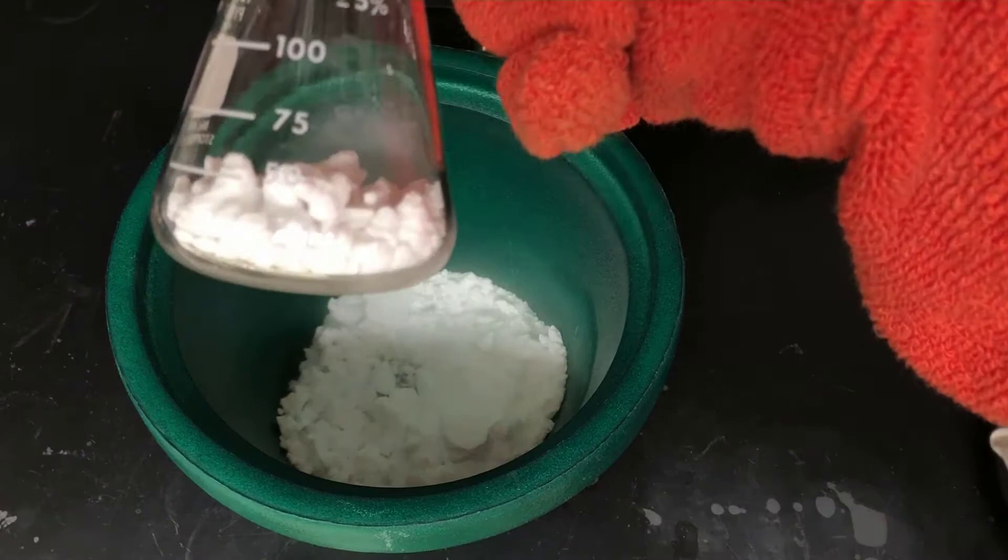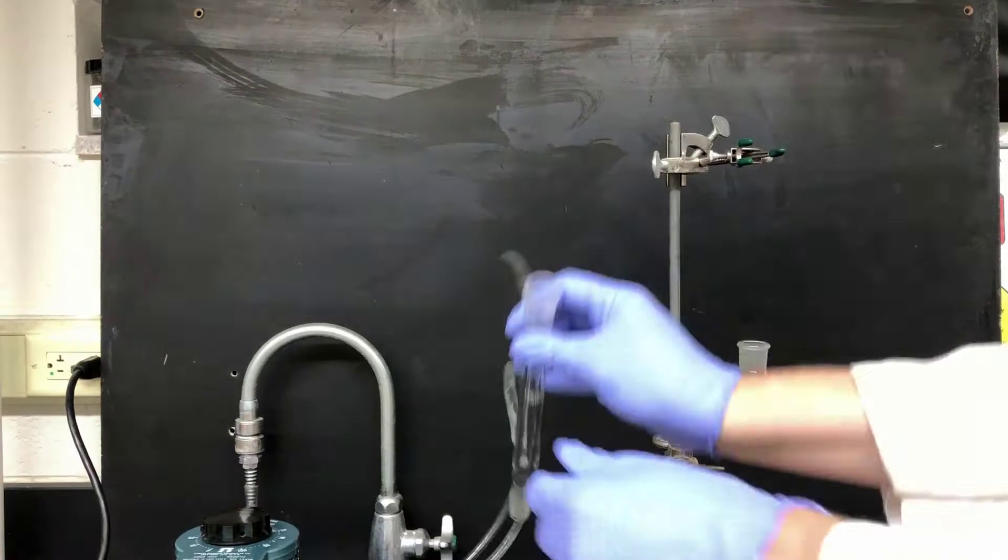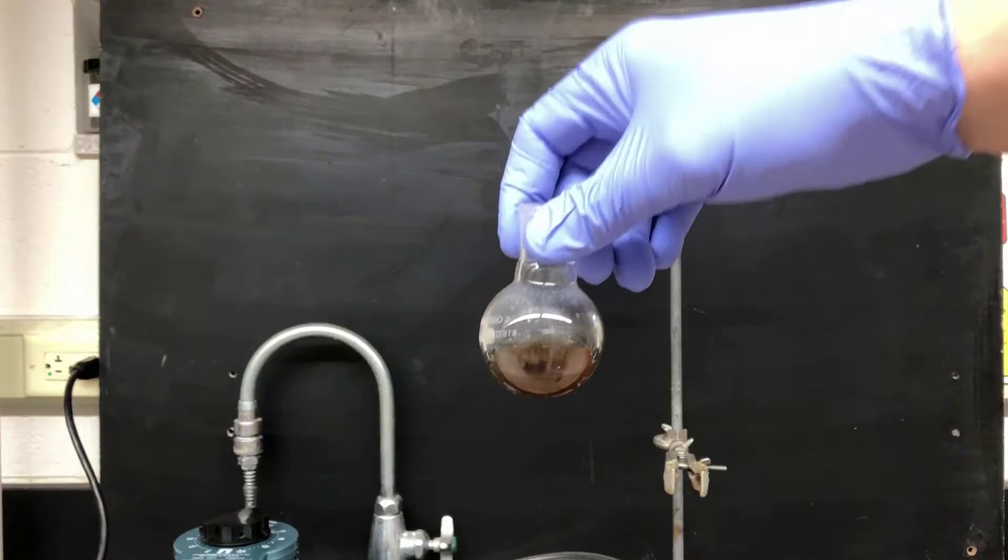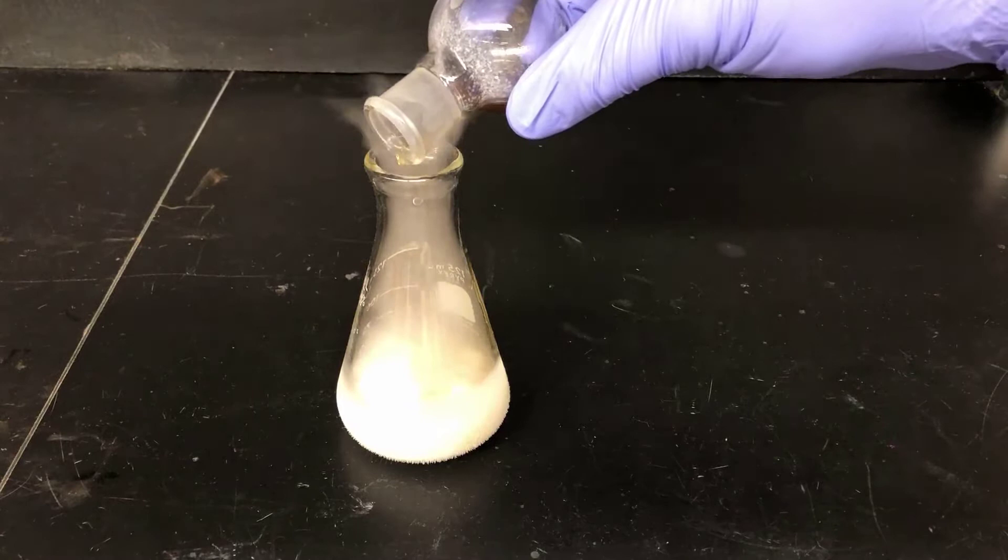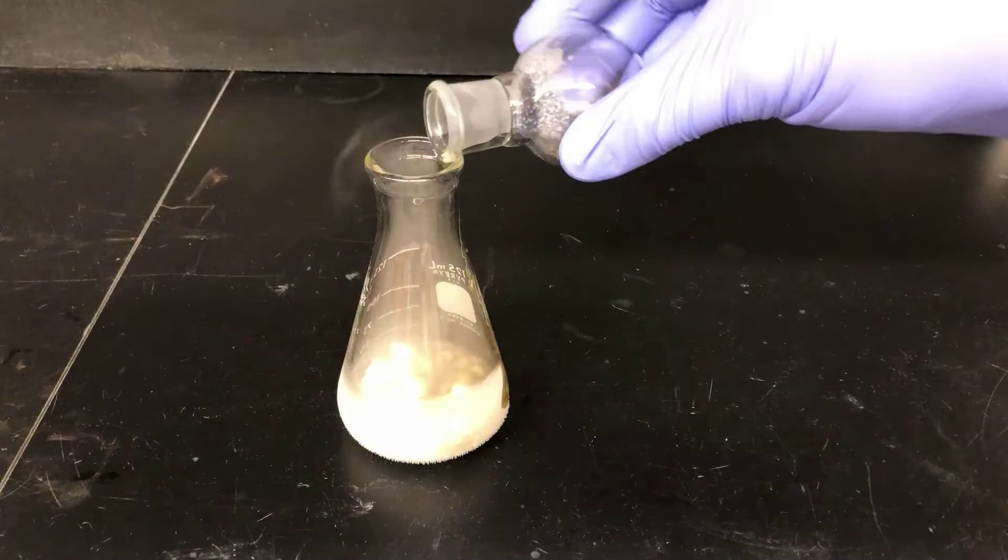Now, I'm disassembling the reaction apparatus, taking apart the various pieces, to get to the flask with the Grignard reagent solution in it. Next, I'll add the Grignard reagent to the solid CO2. This process generates a lot of CO2 gas, which you can see flowing out of the flask here. There are chunks of magnesium left over from the Grignard formation reaction, and I'm pouring such that I leave those behind in the round-bottom flask.